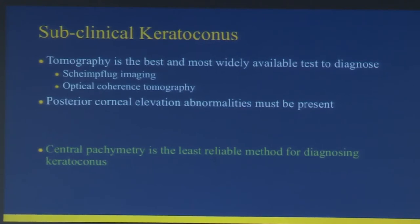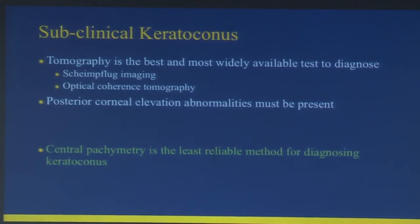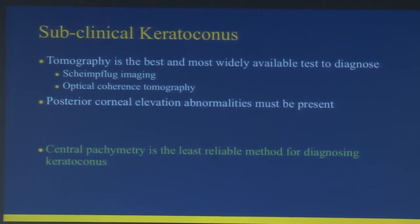Subclinical keratoconus was also defined here. The consensus was that tomography is the best and most widely available test to diagnose, mostly through Scheimpflug imaging and optical coherence tomography. Posterior corneal elevation abnormality must be present. Central pachymetry is the least reliable method for diagnosing keratoconus, though it is still used at many places.